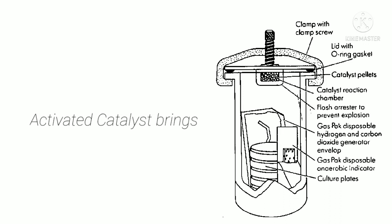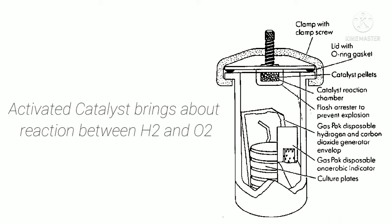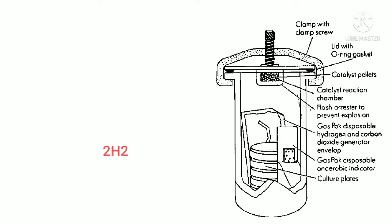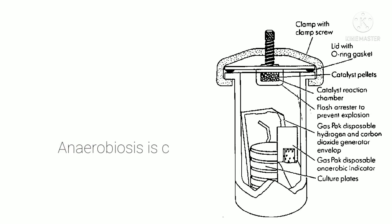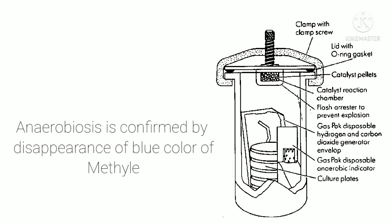The electrical supply is turned on to heat the palladinized catalyst, and activation of the palladinized catalyst takes place. The activated catalyst brings about a reaction between hydrogen and oxygen. Hydrogen gas reacts with oxygen gas in the presence of the palladinized catalyst, resulting in the formation of water: 2H₂ + O₂ → H₂O. Anaerobiasis is confirmed by the disappearance of the blue color of the methylene blue indicator, which disappears in the anaerobic environment.